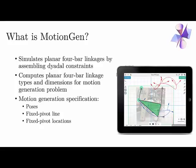In the under-constrained case, you can specify more constraints to make the problem fully constrained. For four positions, you can specify a fixed pivot line constraint, which says you want your fixed pivots of RR dyads to lie on a line. For three positions, you can specify fixed pivot locations directly. As long as the system is fully constrained, it can solve the problem. If you have more than five positions, you can find an approximate solution and designate some poses as exact.